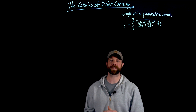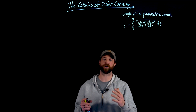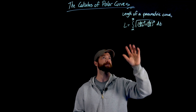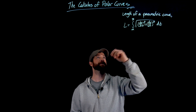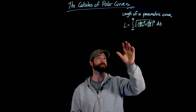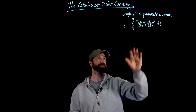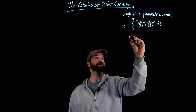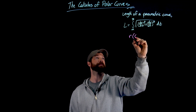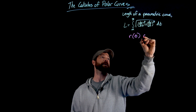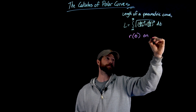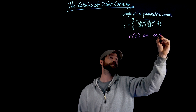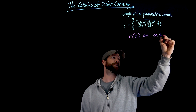Hey, welcome back. In this video we're going to tackle how to find the arc length of polar curves. To do this, we're going to first use the proven formula for finding the arc length of parametric curves. We'll consider a polar curve defined by r = f(θ), where θ goes from alpha to beta.